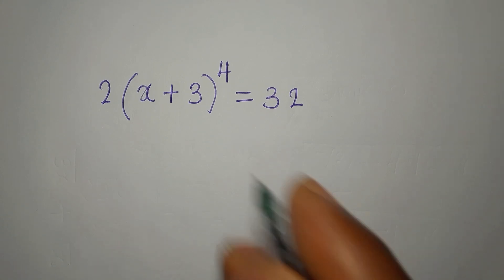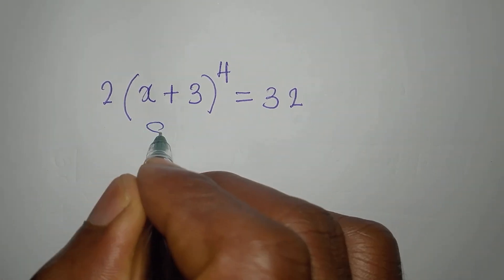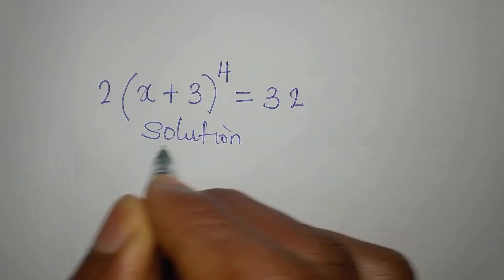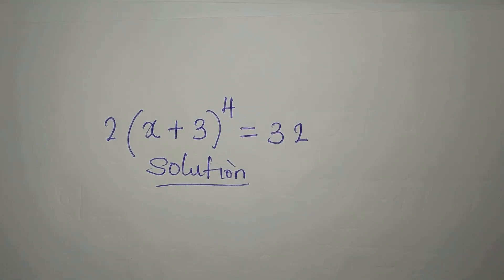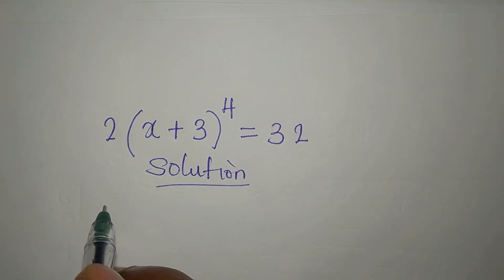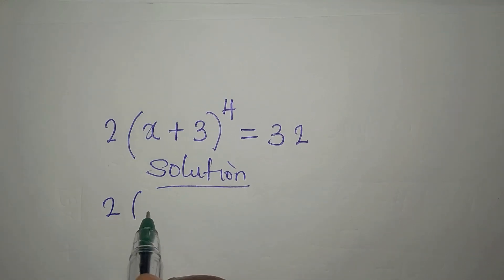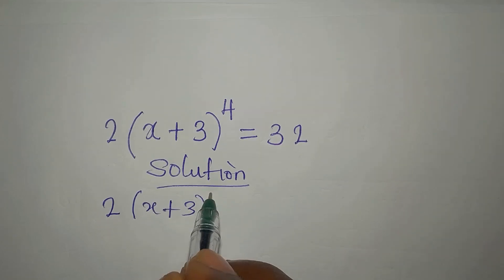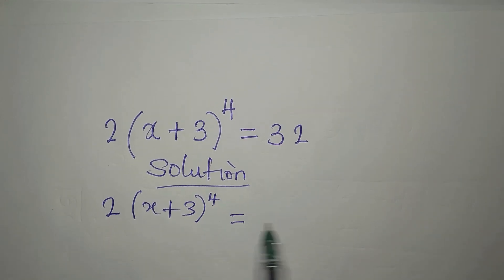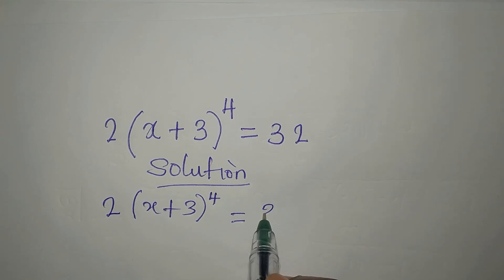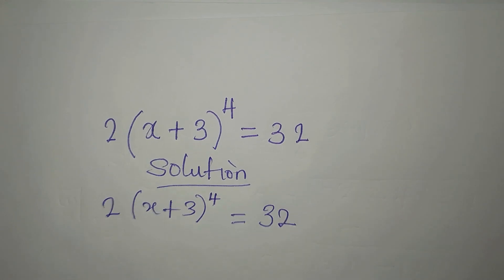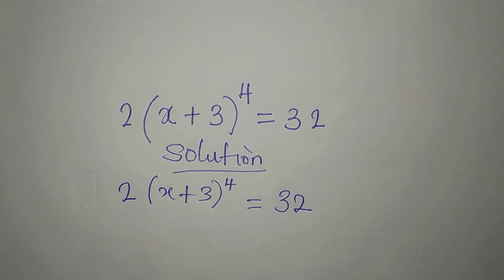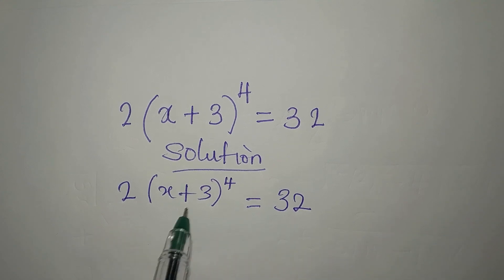Hello everyone. Let's provide the solution to this problem. We have two open brackets: (x + 3) to the power of four equals 32. This is very simple if you know what to do.